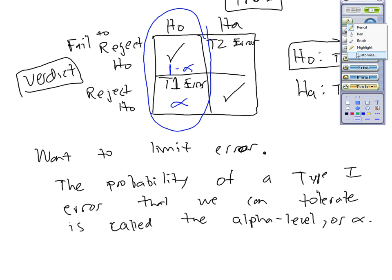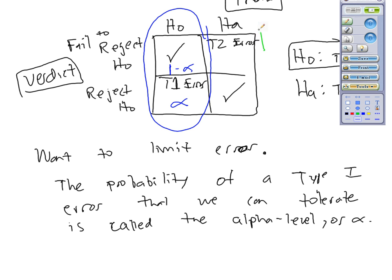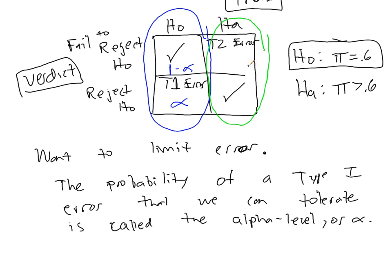For a Type II error, we actually call that something else. We call it a beta level. If your alternative hypothesis is true and you fail to reject, that's an error, and that's referred to by the Greek letter B, which is read as beta, and then this would be 1 minus beta, given that you're in this column.